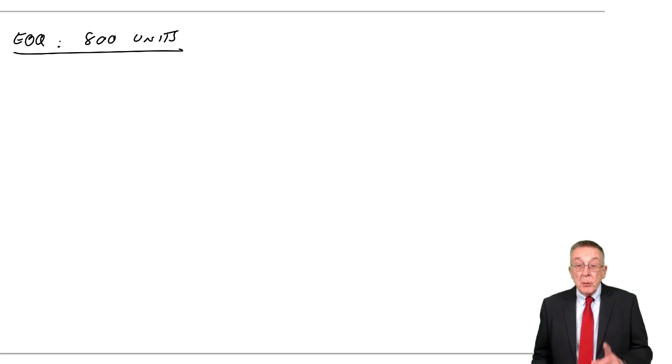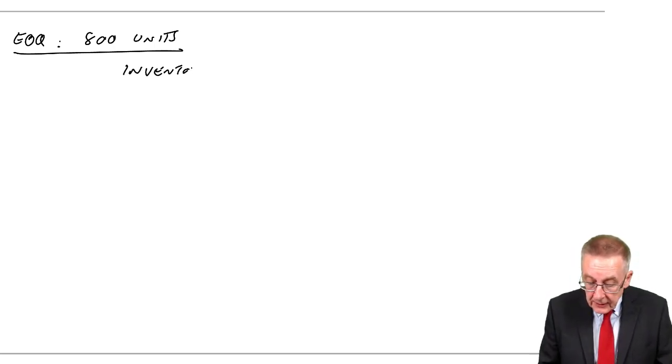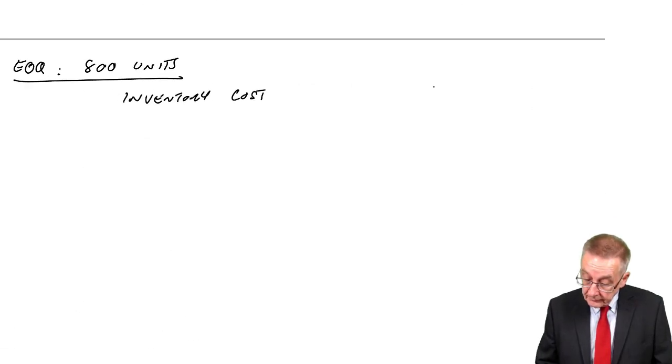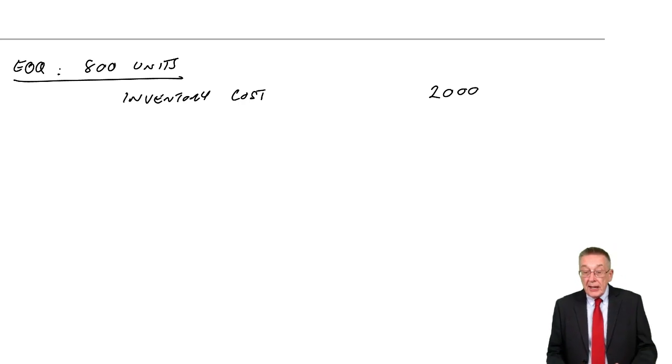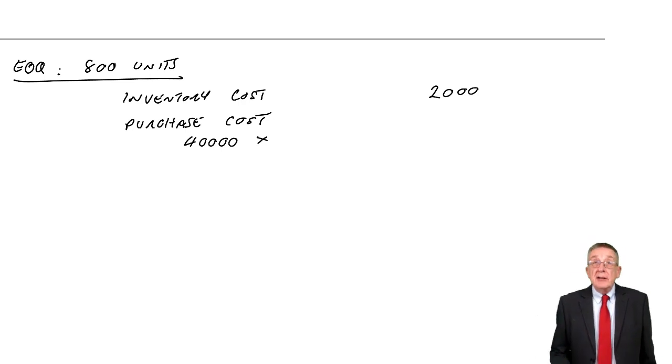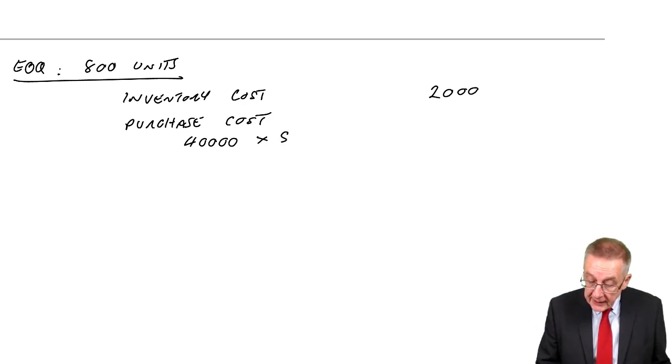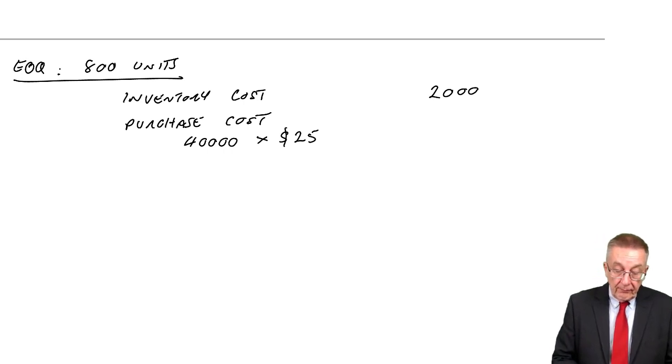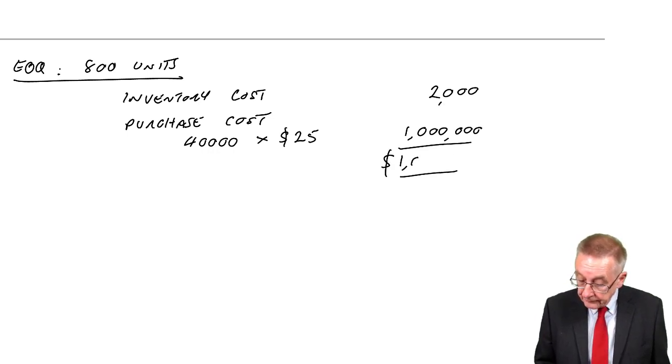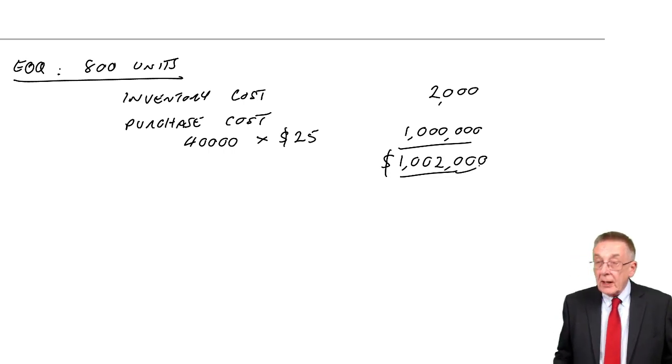If we order 800 units each time, we already know the inventory costs in total were $2,000. And we know that at any other level, that total will be higher. But we now need to also consider the purchase cost over the year. Remember, we're buying 40,000 units a year. And if we order 800, there's no discount, we'll pay the full $25 a unit, which is $1 million. And so the two together, we're $1,002,000.